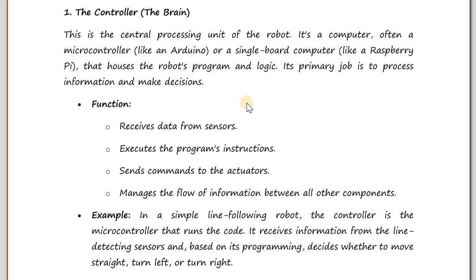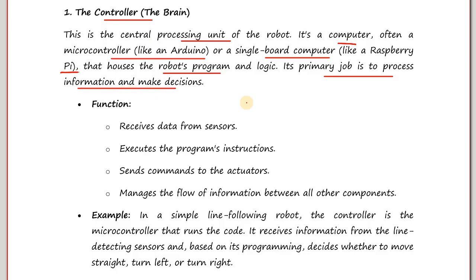The first component is the controller, which is the brain — basically the CPU or central processing unit of the robot, just like a computer. This part is often a microcontroller like Arduino or a single-board computer like a Raspberry Pi that houses the robot's program and logic. Its primary job is to process information and make decisions. The functions of the controller are: to receive data from sensors, execute the program's instructions, send commands to the actuators, and manage the flow of information between all other components.